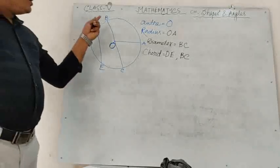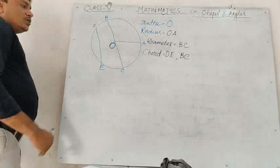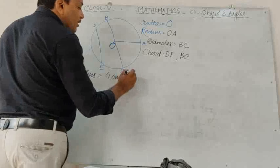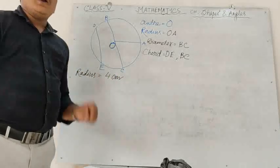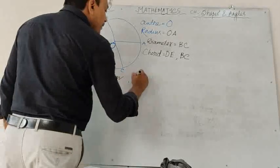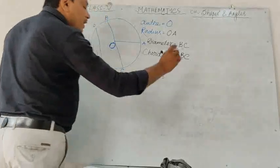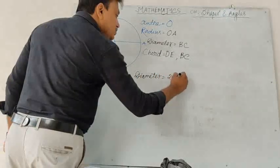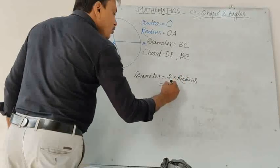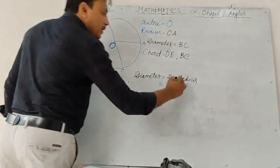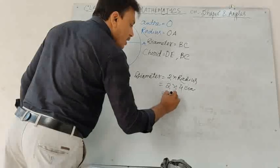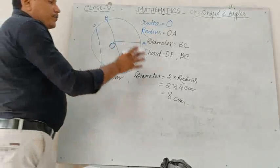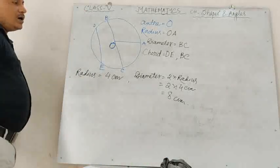Suppose the radius is given as 4 cm and we have to find out the diameter. Diameter equals 2 into radius, so diameter equals 2 into 4 cm, which gives 8 cm. In this way, if radius is given you can find out the diameter of the circle.